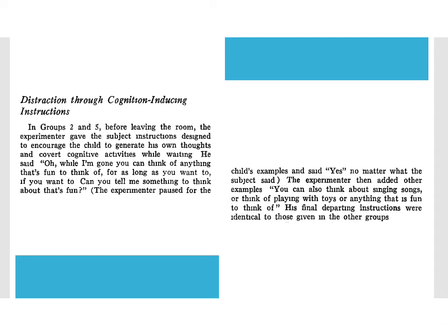They also had conditions using distraction through cognition-inducing instructions. Before leaving the room, the experimenter encouraged the child to generate their own thoughts: 'While I'm gone, you can think of anything that's fun — can you tell me something to think about?' The child offered an example, and the experimenter added others: 'You can also think about singing songs, or playing with toys, or anything that's fun.' Then the same contingency applied — wait for the preferred reward or ring the bell for the unchosen one.